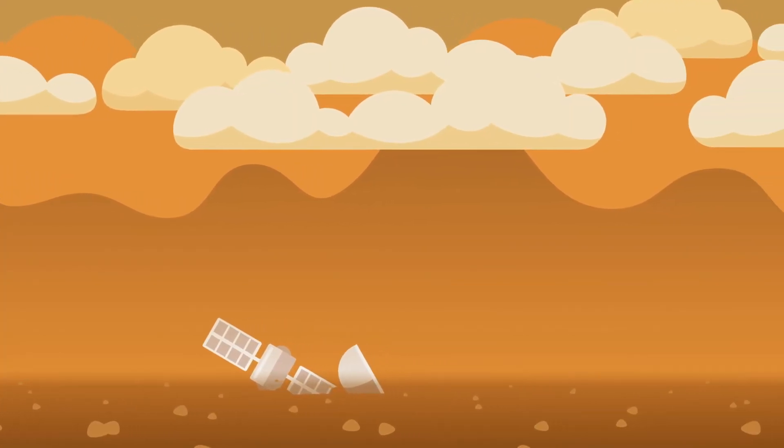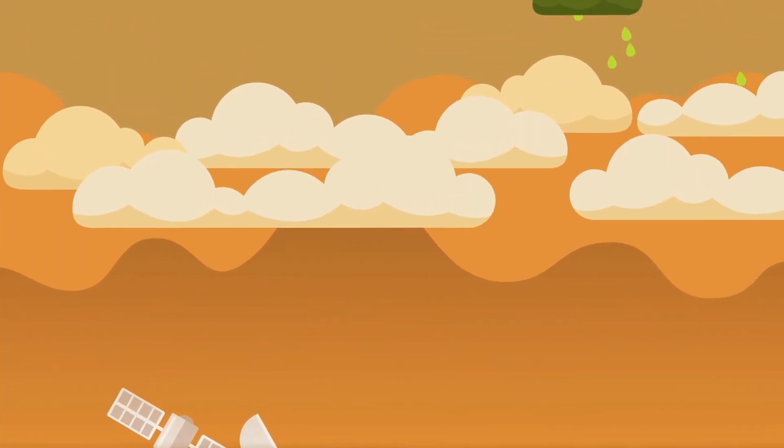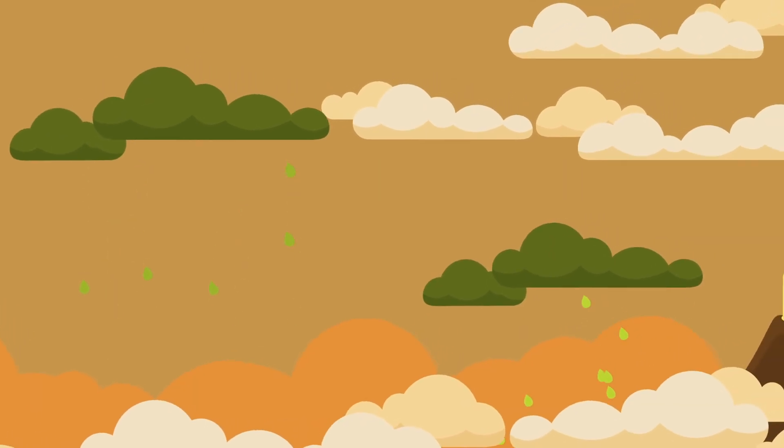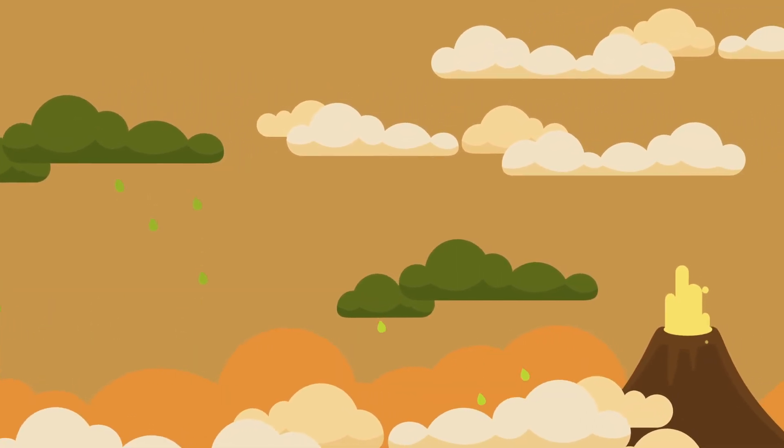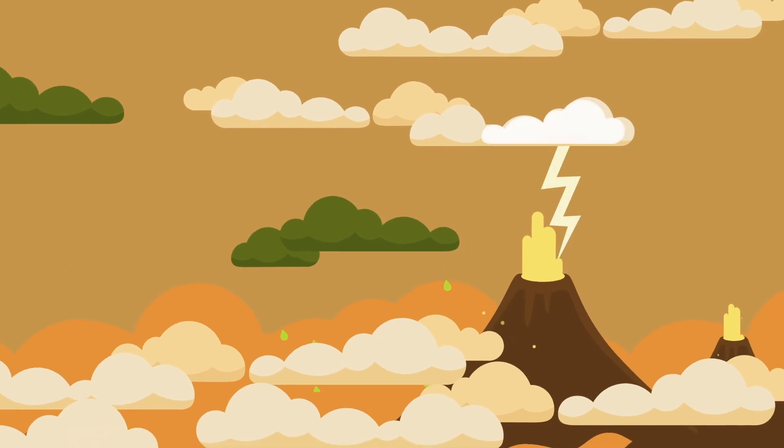Over there, on Venus, it is always twilight and acid rain is constantly falling, with raging hurricanes and lightning storms and erupting volcanoes.